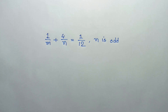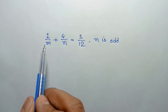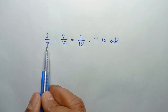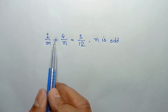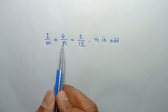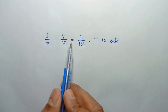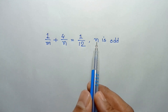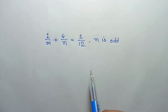Hi everyone. In this video I am going to show how to solve this Olympiad problem. We have to find the integer solution of 1 over m plus 4 over n is equal to 1 over 12, and n is an odd number.